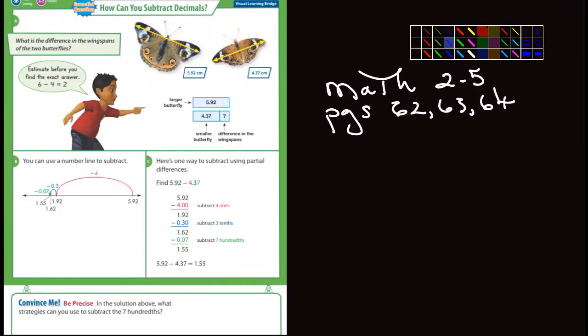Okay fifth graders, we're doing lesson 2-5, pages 62, 63, and 64, and this is all about subtracting decimals. You know how to add decimals, we've been doing that, and subtracting decimals is really no different.